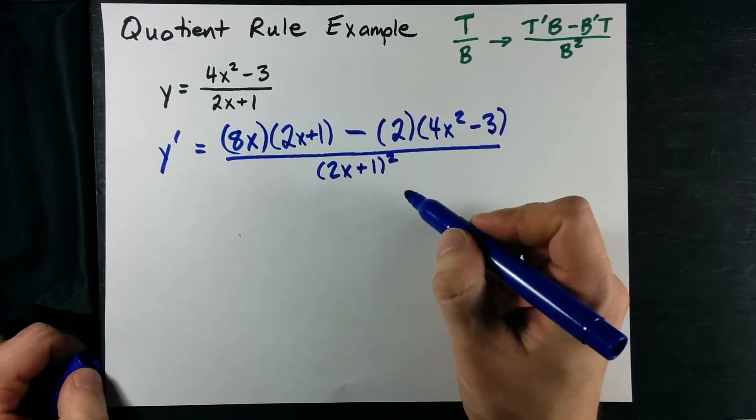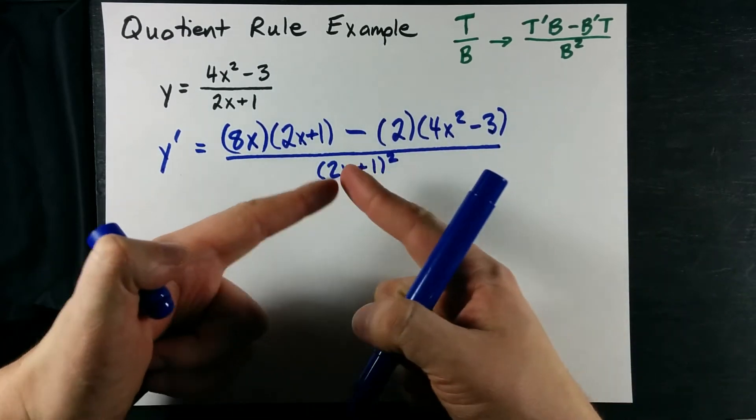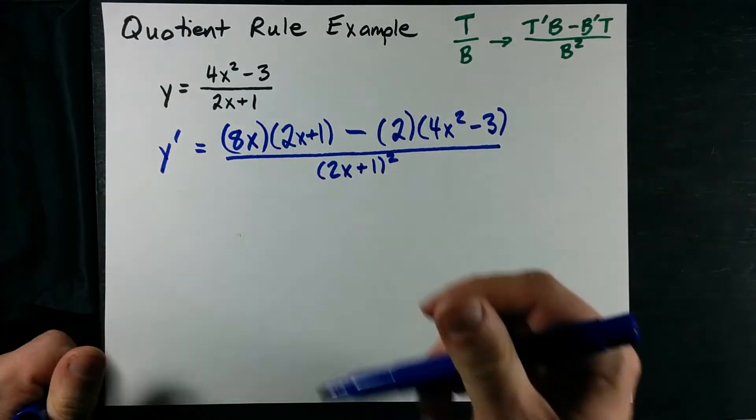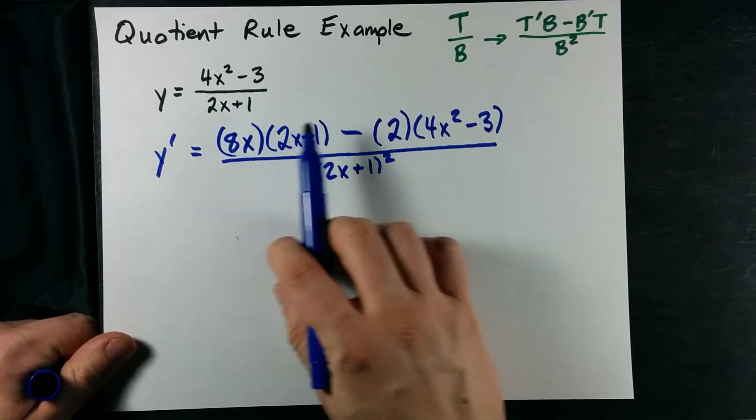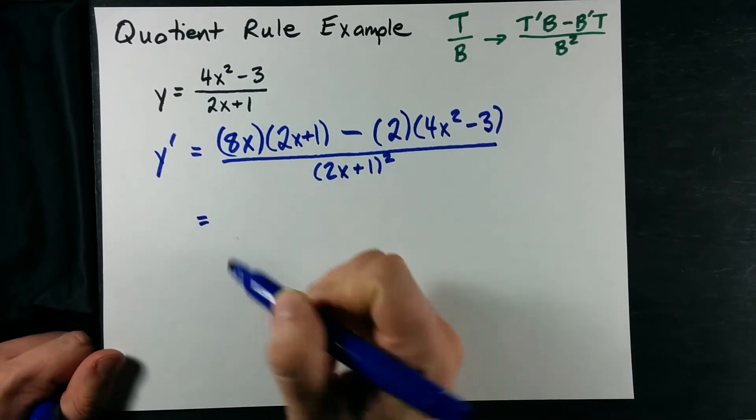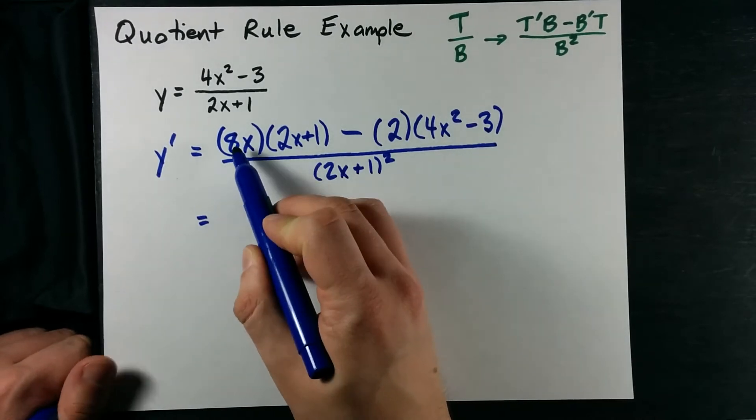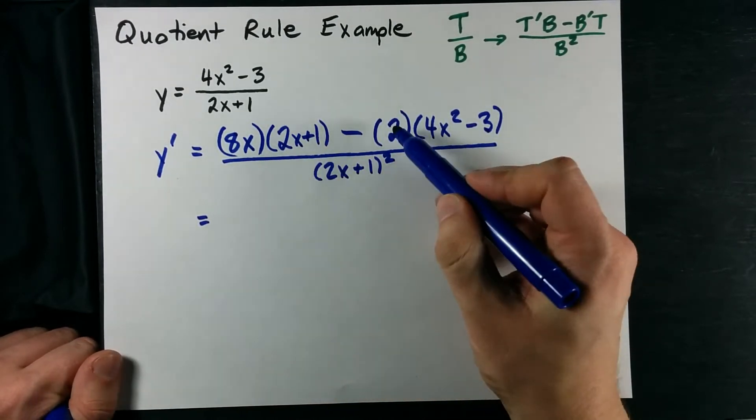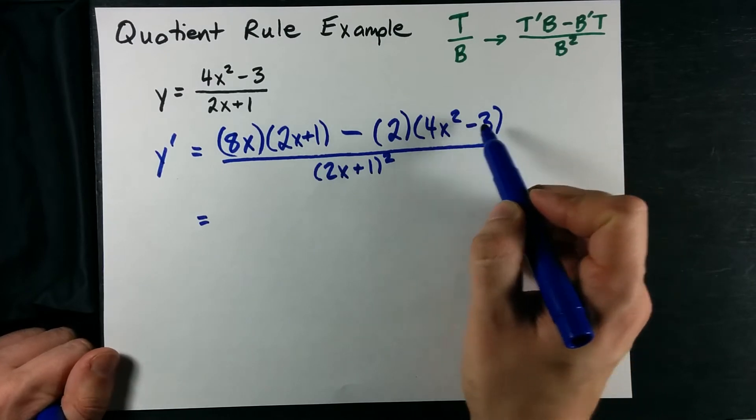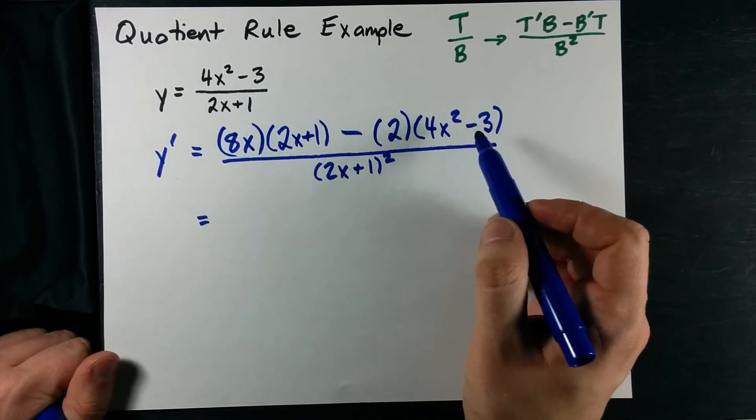It's pretty easy. Now, you've officially taken the derivative, and this is technically what it is, but your teacher's probably going to want you to clean this up a little bit, especially when it's just polynomials like this. You know what 8X multiplied into this bracket is, and you can multiply 2 into this bracket and collect all the like terms in the top.